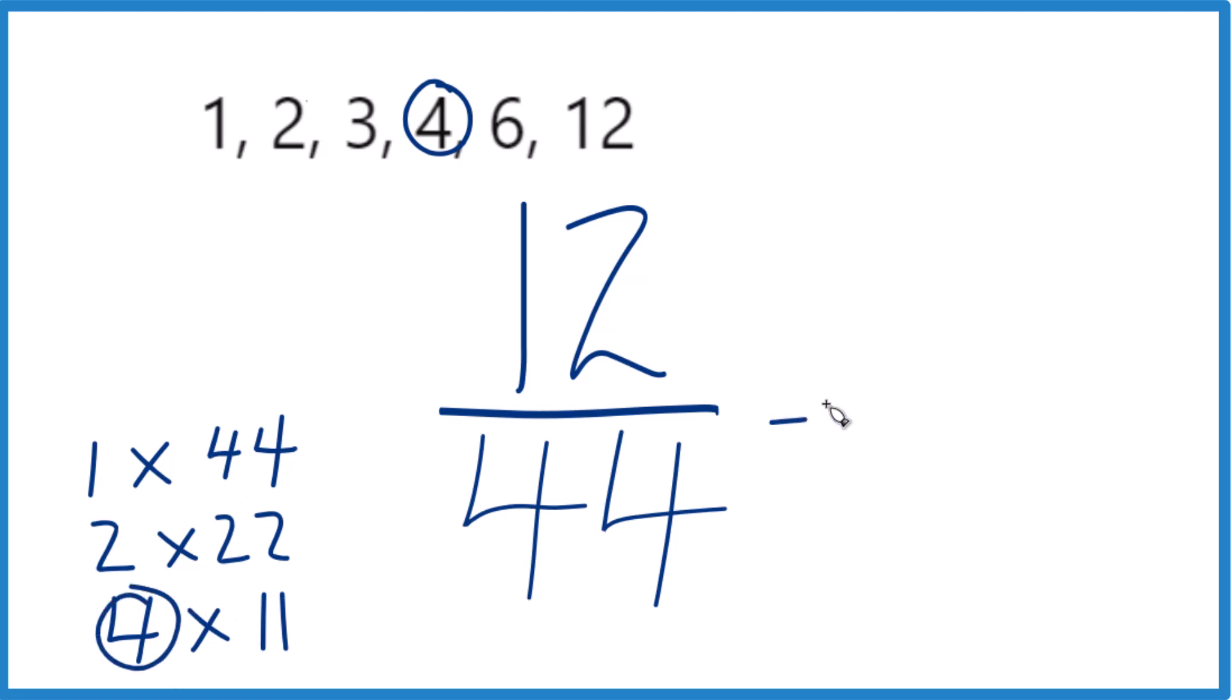So we'll divide 12 by 4. 12 divided by 4 is 3, 3 times 4 is 12. And we can divide 44 by 4, that gives us 11.